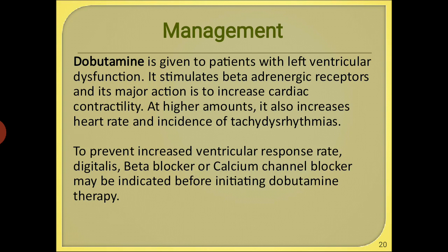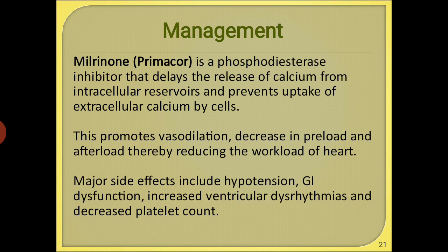Dobutamine is given to patients with left ventricular dysfunction. It stimulates beta-adrenergic receptors to increase myocardial contractility. However, its adverse effect is that at higher doses it can increase the heart rate and cause tachyarrhythmia. To manage this, digitalis, beta blockers, or calcium channel blockers may be given to control excessive increase in heart rate.